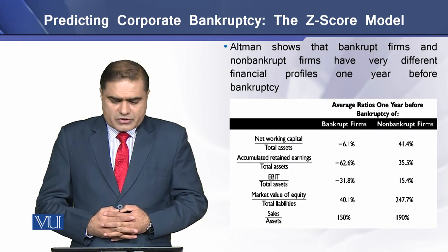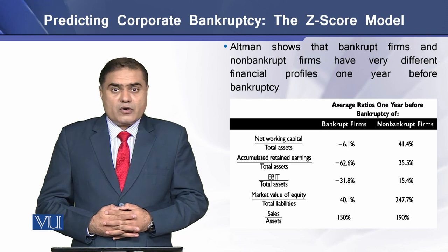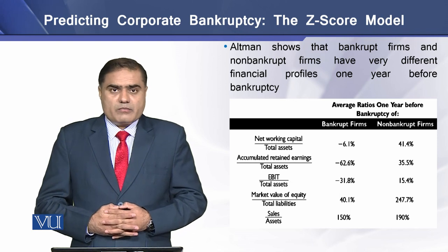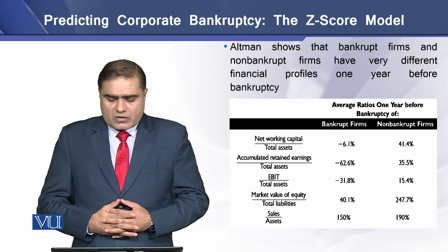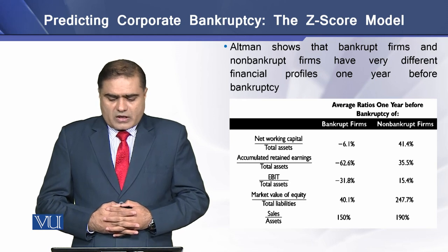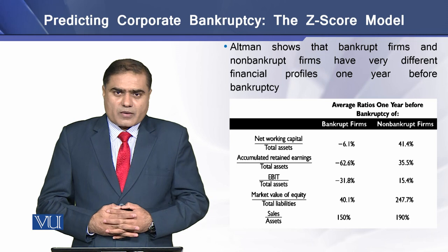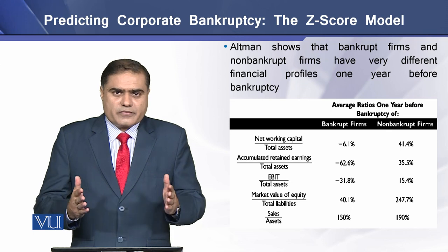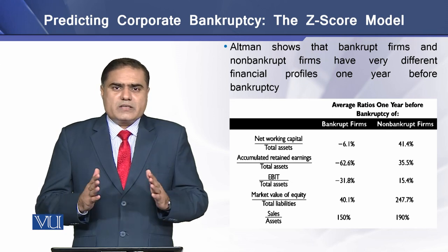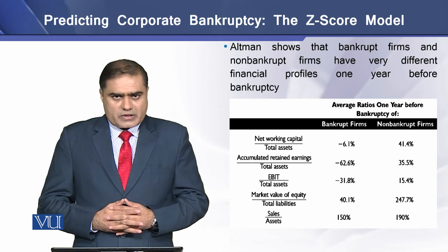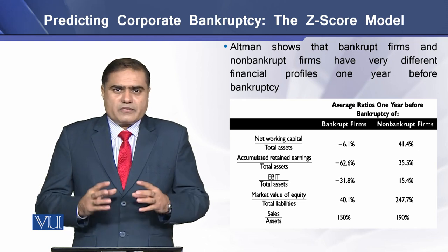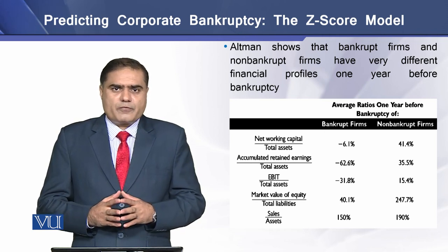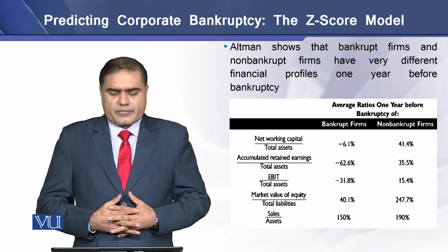In his research, Altman shows that bankrupt firms and non-bankrupt firms have very different financial profiles one year before bankruptcy. As we can see on the screen, we have a table that shows ratios for bankrupt firms and non-bankrupt firms, and the ratios show a much larger difference between the two values. It is worthy to note that Altman was the first person in finance theory to use the terms bankrupt and non-bankrupt firm.